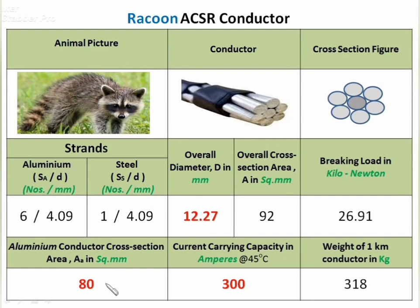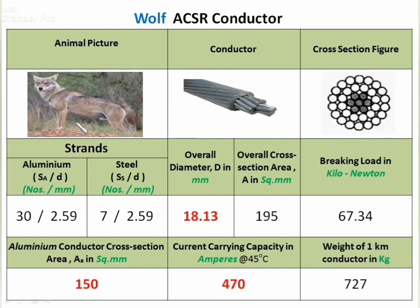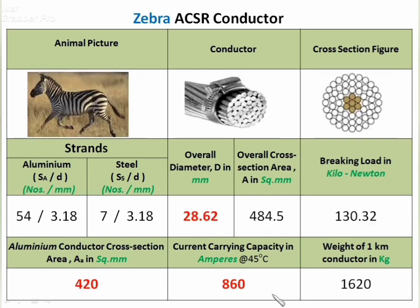Raccoon ACSR has aluminium area 80 mm² and 300 A current capacity. Dog ACSR — already discussed — has 100 mm² area and 360 A current capacity. Wolf ACSR has 30 aluminium strands of 2.59 mm diameter and 7 steel strands, with 150 mm² area and 470 A current capacity. Panther ACSR has 54 aluminium strands, 7 steel strands, 420 mm² area, and 860 A current capacity.